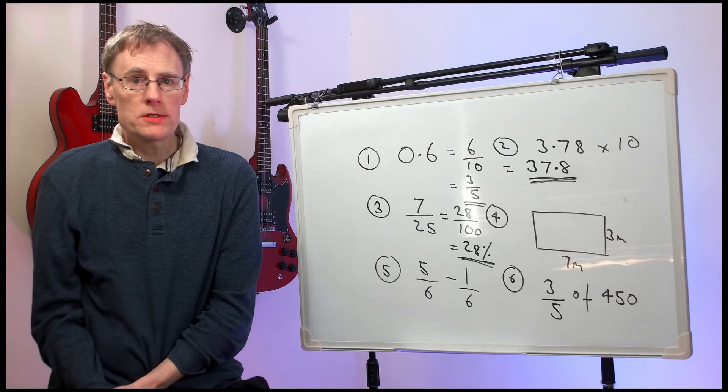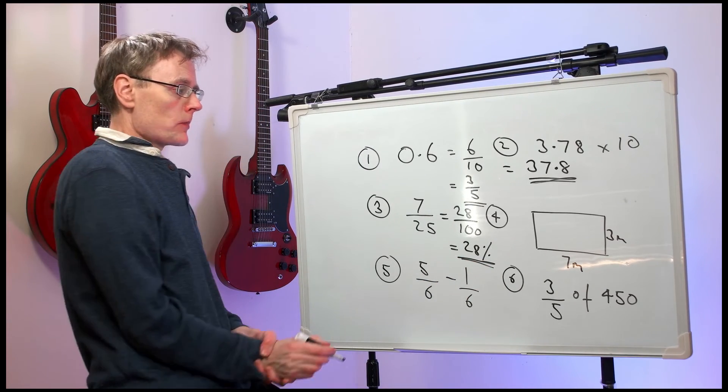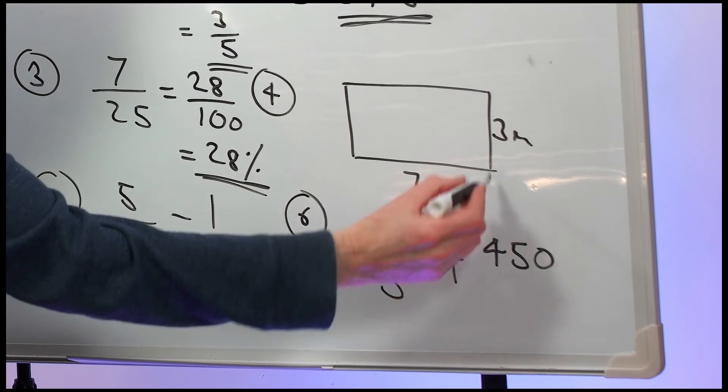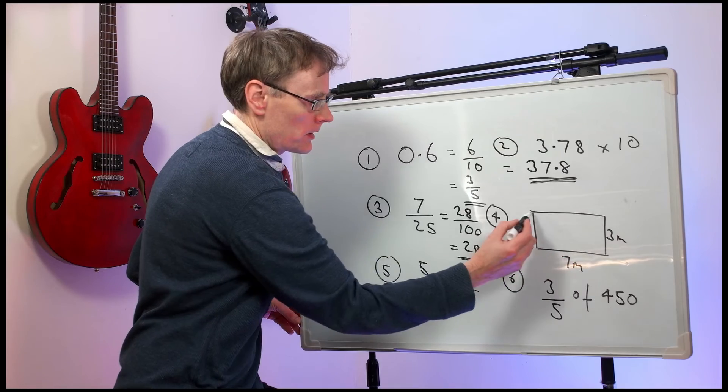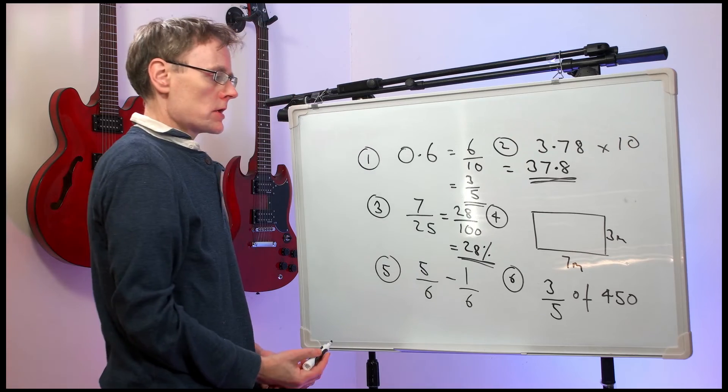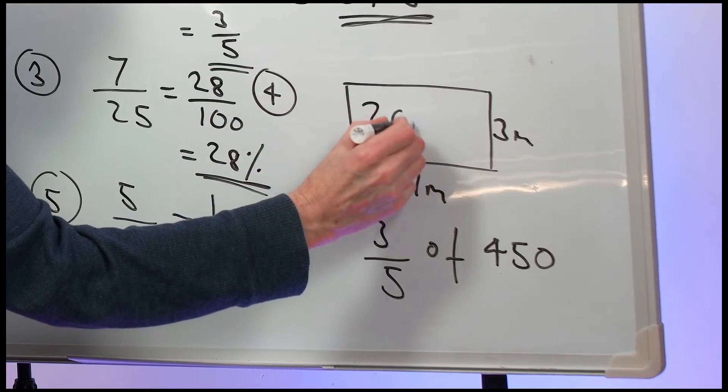Question four: What is the perimeter of that rectangle? Well, the perimeter is the length around the edge. We have seven plus three, and another seven and three. So we have 20 metres.